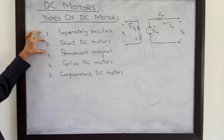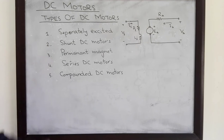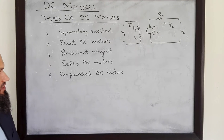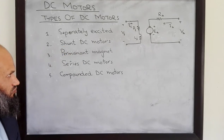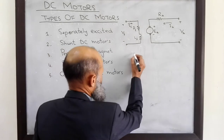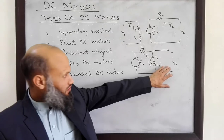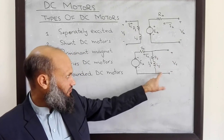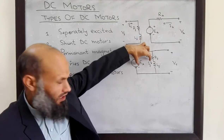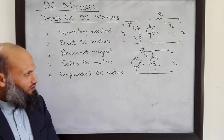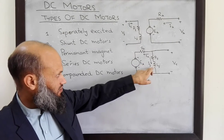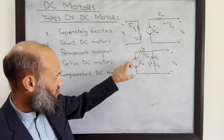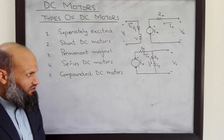In shunt DC motors, there is a single voltage source which excites both the field winding and the armature winding. The equivalent electrical circuit of shunt DC motors is given by this diagram. In shunt DC motors, the field windings and the armature circuit are connected in parallel. The field windings are on the electromagnets and the armature windings are on the rotor of the DC machine.